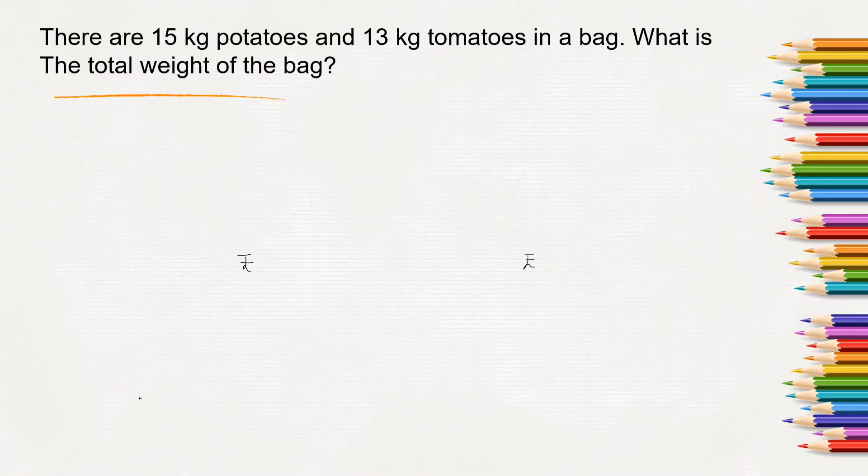Here is the next question. There are 15 kg potatoes and 13 kg tomatoes in a bag. So we will have to add both to find out the total weight of the bag. 5 plus 3 is 8, 1 plus 1 is 2. So total weight of the bag will be 28 kg.